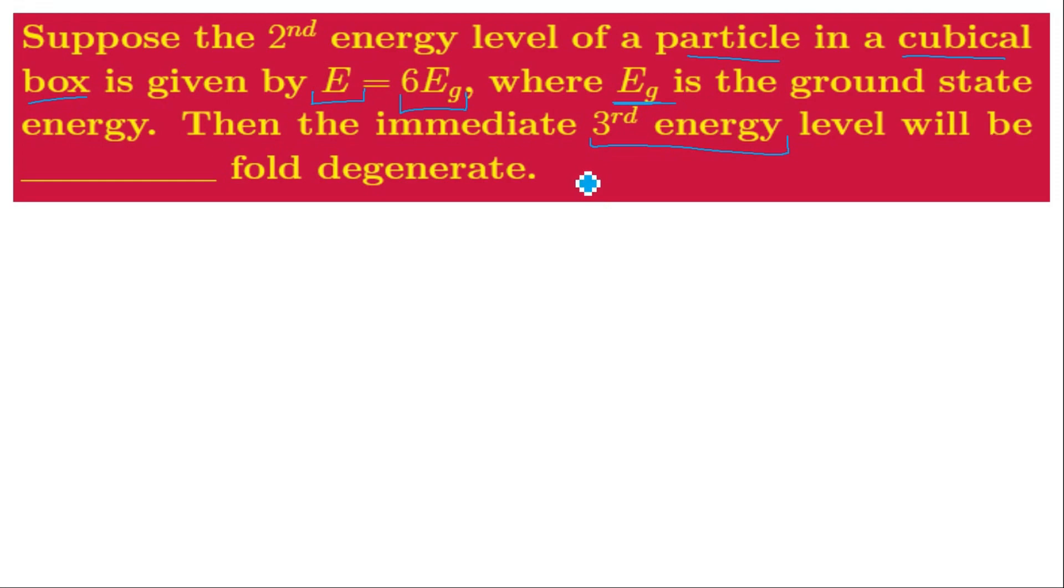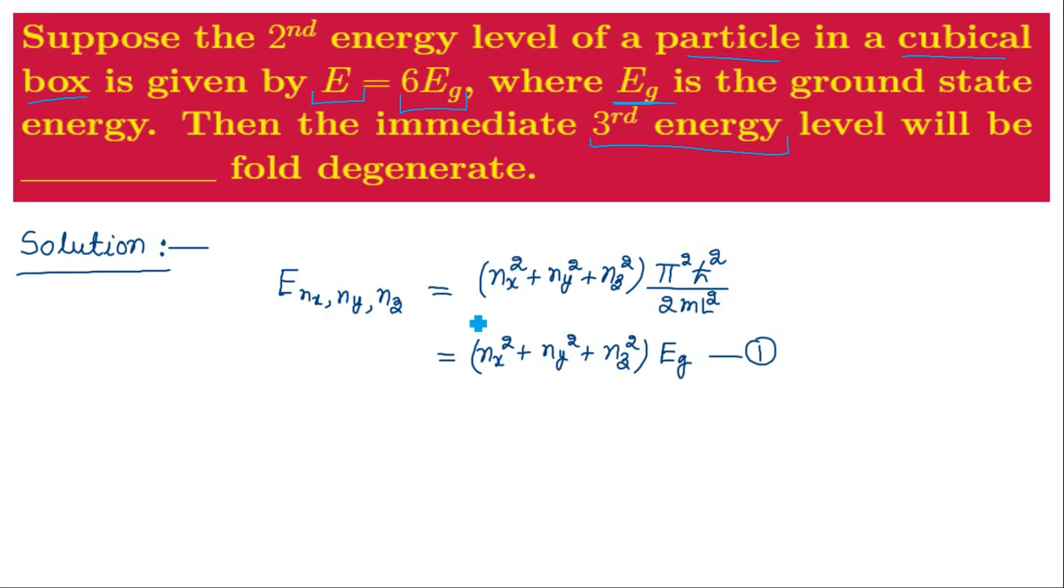Let us now solve this problem. We know that the energy eigenvalues of a particle in a three-dimensional box are given by this formula, and here NX, NY, NZ are the quantum numbers for the motion along XY and Z axis, and L is the length of the box along XY as well as Z axis.